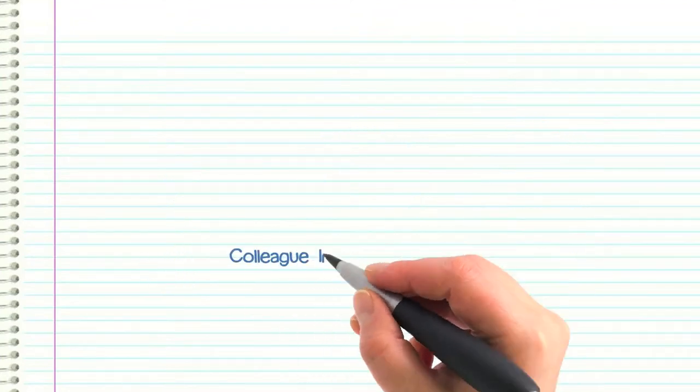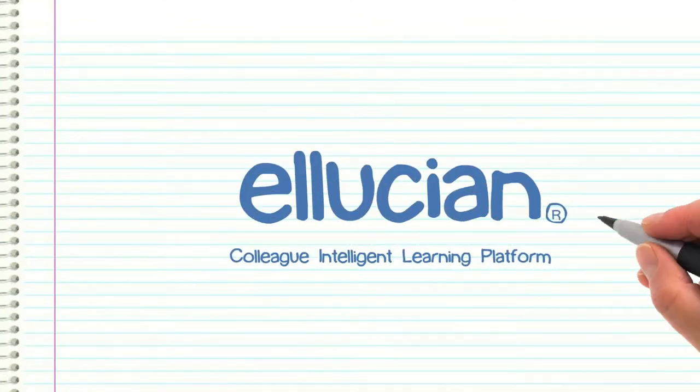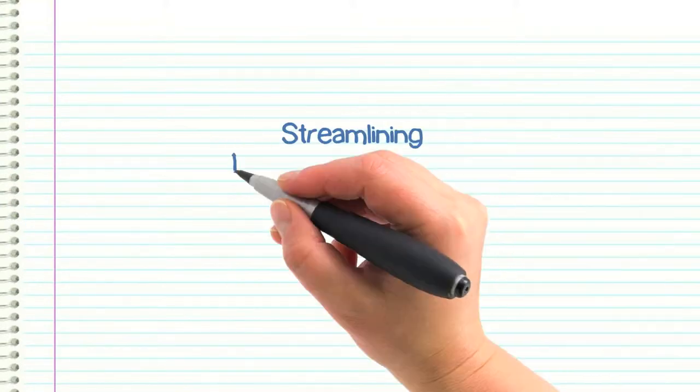Today, there's the Colleague Intelligent Learning Platform from Ellucian. It's designed to eliminate these issues by streamlining the common, fundamental tasks associated with teaching and learning online.